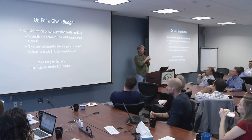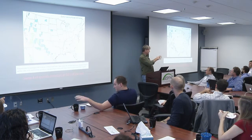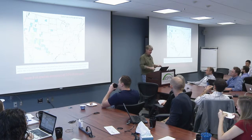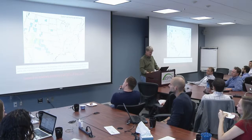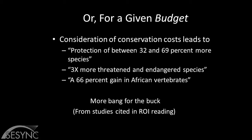Another way of looking at this is: instead of fixing the number of species and asking can we get them more cheaply, you flip it. For a given budget—say $10 million—how many more species can you protect? Some studies show that just by considering costs, you can protect 32 to 69 percent more, or even three times more. This has really stimulated thinking in the conservation community about where and how they should conserve, just by thinking about the cost side. An important note is there's no heavy economics here yet—except that costs matter.